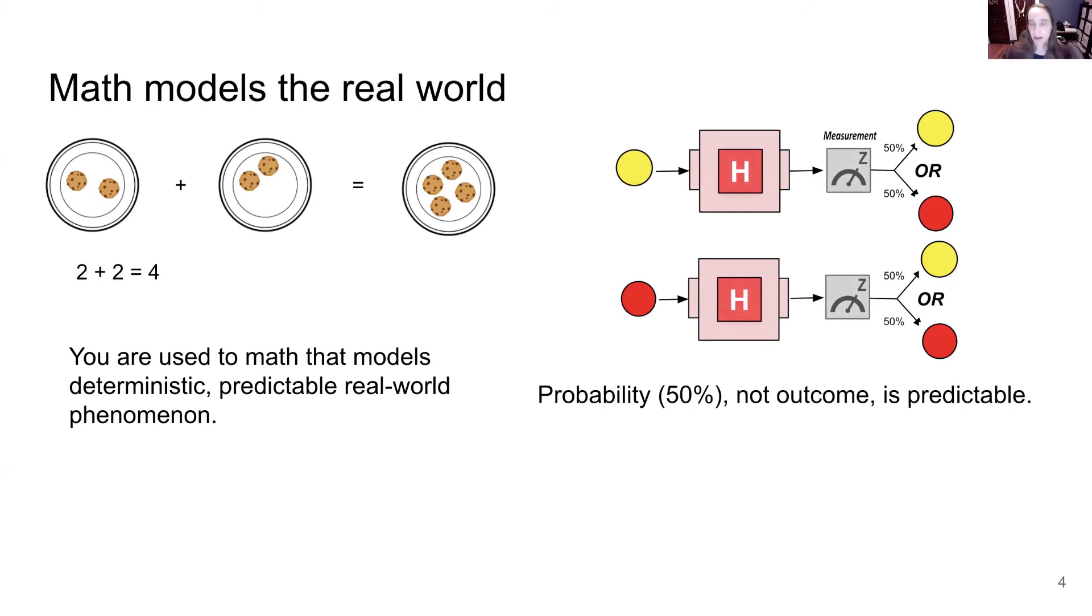for example, yellow, and turns it into something that has a 50-50 probability of being measured yellow or red. So this is one of the most important operations in quantum, and it allows us to get that specialness, that uniqueness that distinguishes quantum from classical computing.